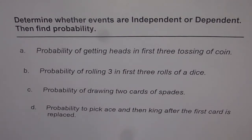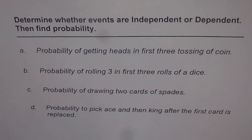Here are my suggestions. We are basically trying to figure out if the events are independent or dependent. The only way is you have to see that when there are more than one event, is the outcome of the next event affected by the previous one? That is the question to be answered.